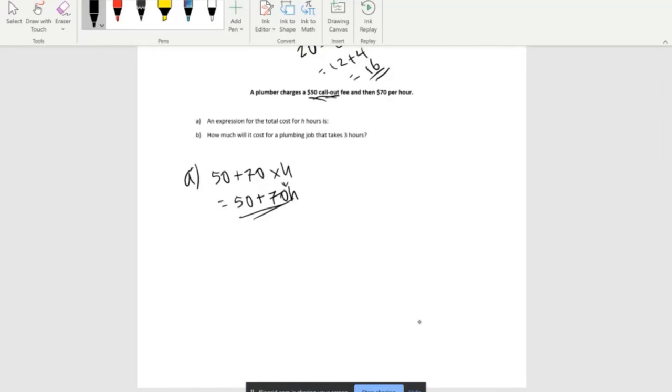On to the next question, which is B: How much will it cost for a plumbing job that will take 3 hours? As we know from our expression, it will be 50 plus 70H. Now we know that H has a value of 3.